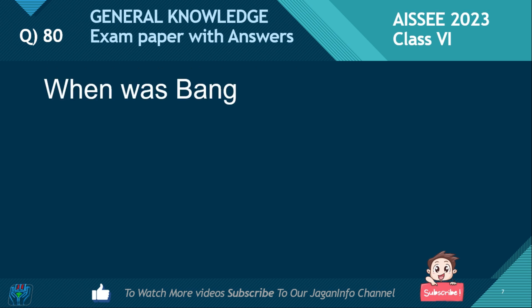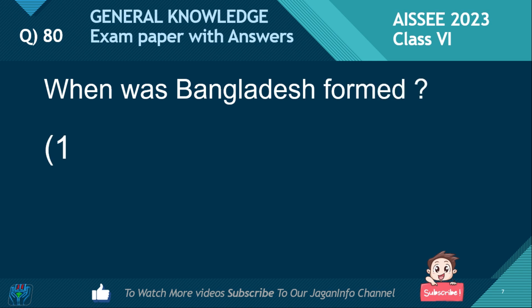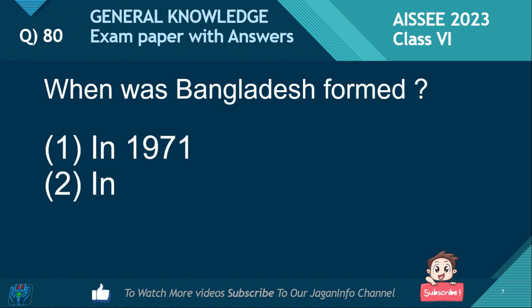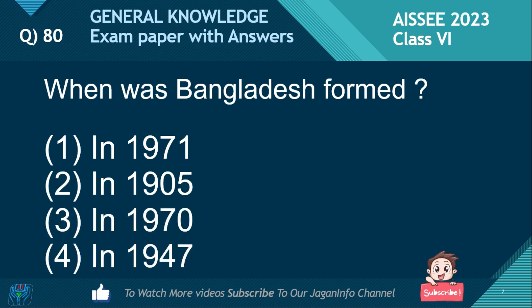When was Bangladesh formed? Options: 1971, 1905, 1970, 1947. The right answer is March 26, 1971.